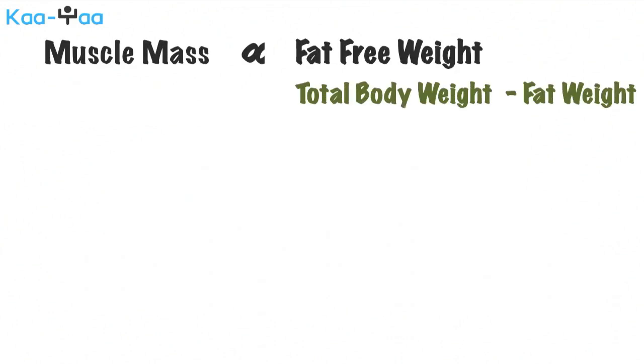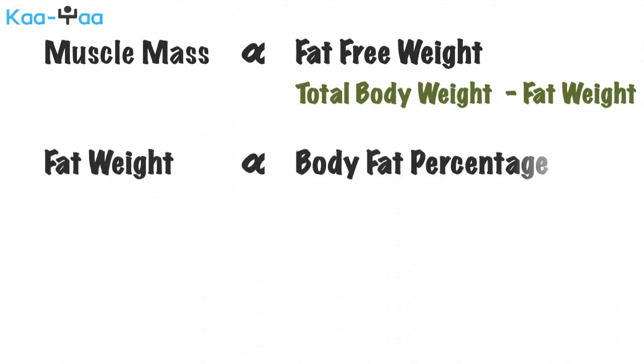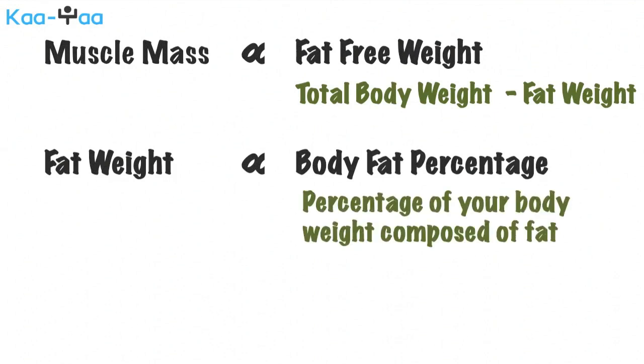Your muscle mass is proportional to your fat-free weight, which is your total weight minus your fat weight. Your fat weight can be calculated by figuring out your body fat percentage, that is, the percentage of your body weight which is composed of fat.